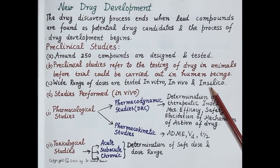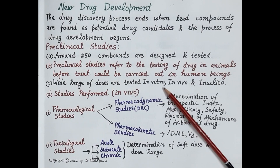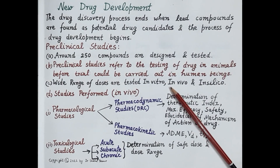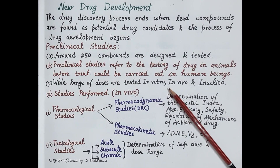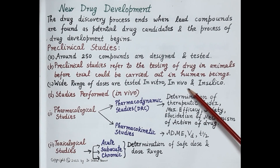In vitro, in vivo, and in silico are the experimental models used to perform preclinical studies. In silico study is performed on computers via simulation. In vitro means studies are performed outside the body of a living organism — in test tubes and petri dishes — on microbial cultures, cells, tissues, or other biological components. In vivo means the study takes place inside a living organism, that is, inside an intact animal.